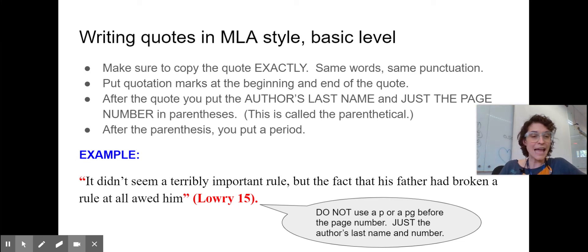So that is a basic MLA style quotation. I've taken a word for word sentence from a book. I've typed it exactly. I've added quotation marks around the words that aren't mine. I've added a parenthetical. And inside that parenthetical, I put the author's last name and the page number, just the number.